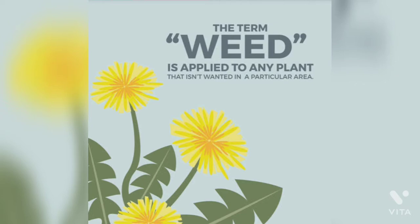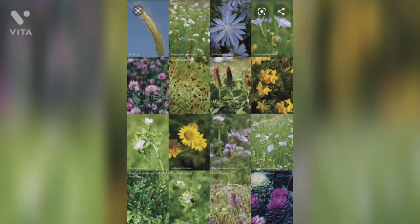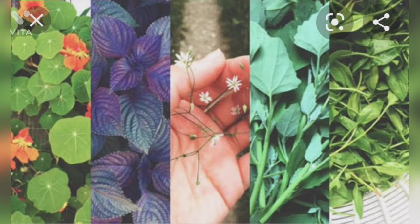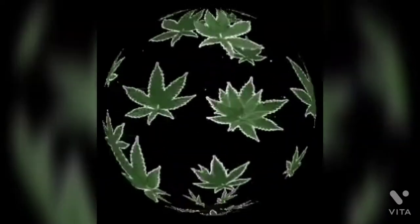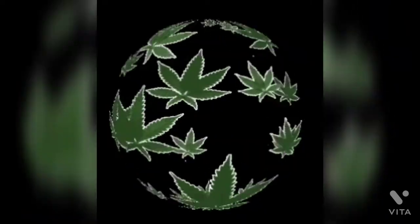Weeds harm crops in various ways. The growth of weeds in the crop field is harmful because they consume a great amount of nutrients, water, sunlight, and space which is meant for the crop plant. Weeds also harbor pests, which are basically harmful insects that destroy the crops. Crop pests spread various crop diseases. Some weeds produce toxic substances that may be poisonous for animals and human beings.